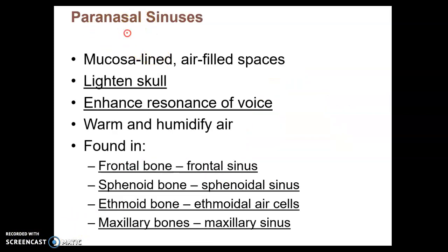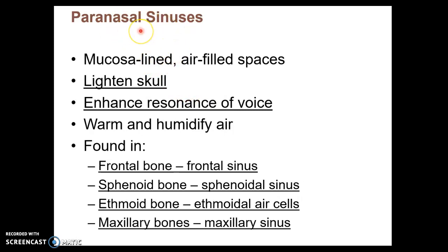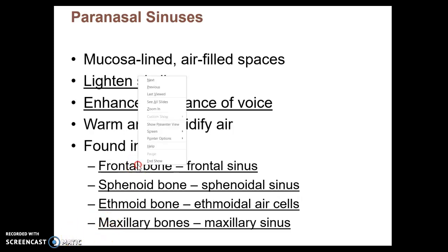We have paranasal sinuses inside some of our facial and cranial bones. These are spaces within the bone that act to make your skull a little lighter, and also produce the sound of your voice because they're resonating chambers for your vocal cords. Here are the four bones in the skull where we find sinuses — these are important to know: frontal bone, sphenoid bone, ethmoid, and maxillary bones.